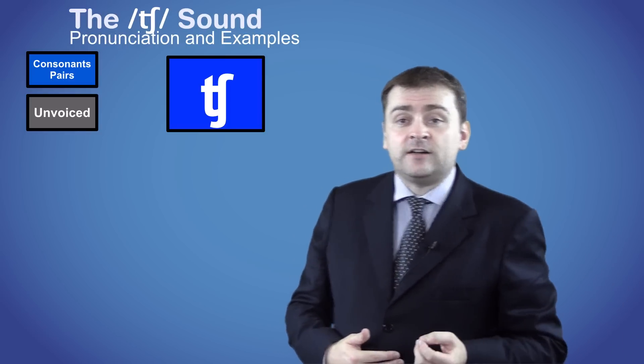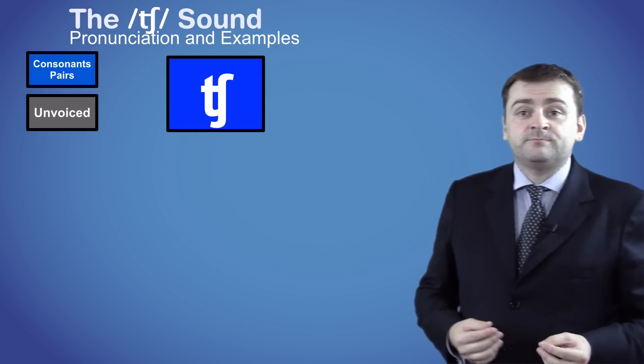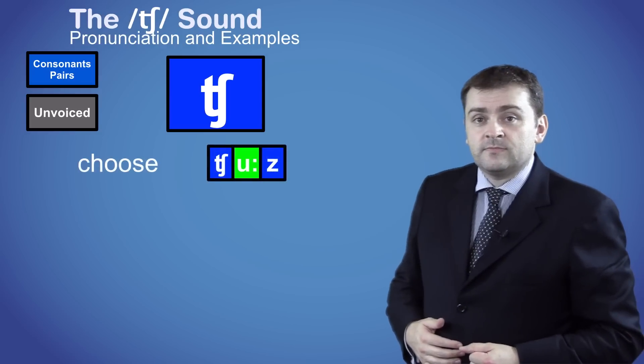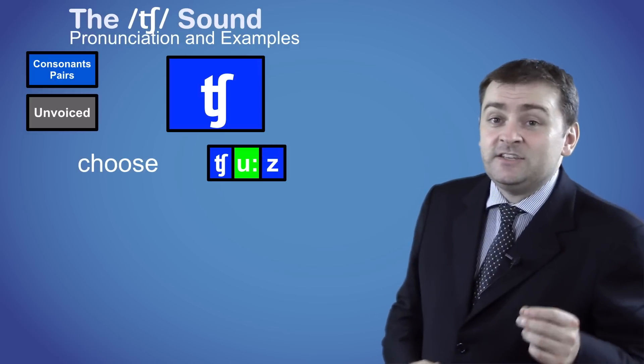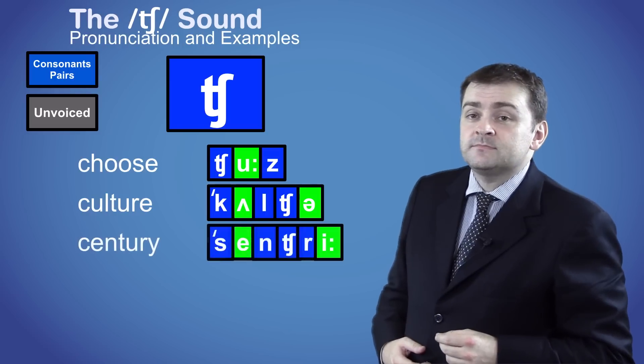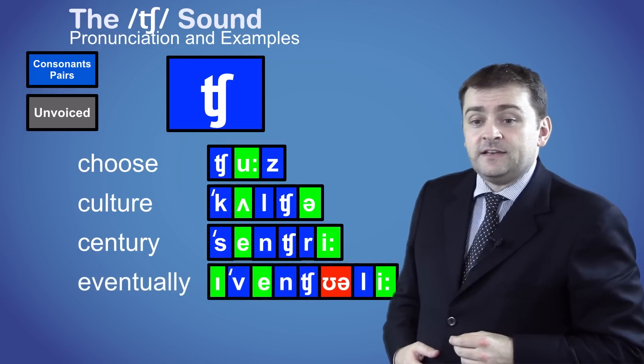The ch sound is normally spelled with the letters ch as in the words choose. But it can also be spelled with the letters tu as in the words culture, century and eventually.